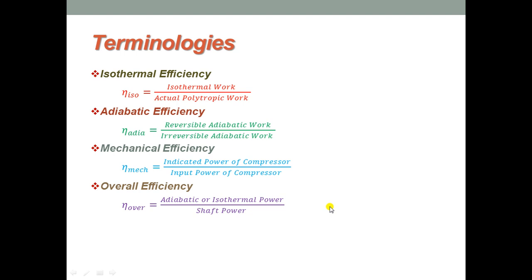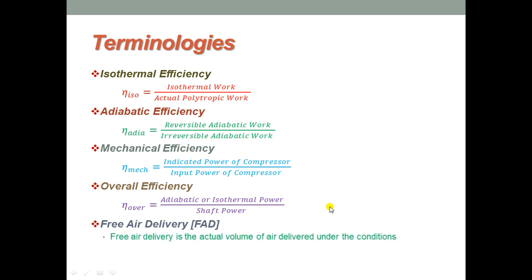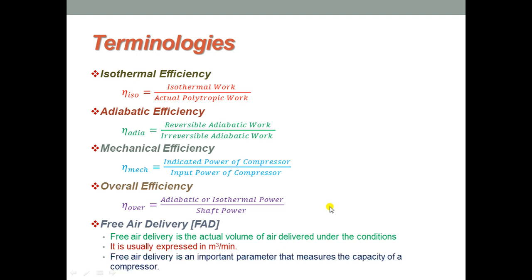One important terminology is free air delivery, or FAD. Free air delivery is the actual volume of air delivered under the conditions of temperature and pressure existing at the compressor intake. It is usually expressed in cubic metres per minute. FAD is an important parameter that measures the capacity of a compressor in terms of air flow it can handle, and is normally measured at standard sea-level atmospheric conditions.